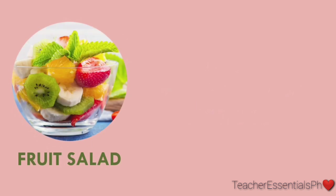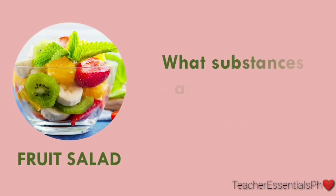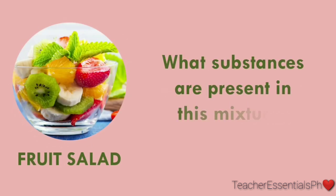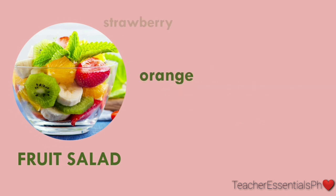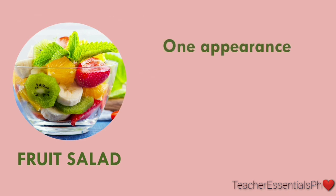And the last example is the fruit salad. What substances are present in this mixture? To make a fruit salad, we need an orange, a strawberry, a banana, a kiwi, and many more. So, does it have only one appearance? No, it doesn't.